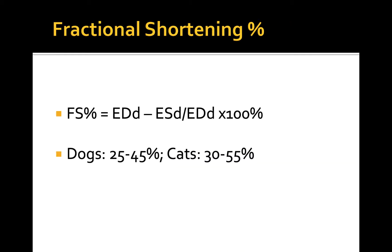Once you have these two measurements obtained, you can calculate fractional shortening using this formula: end diastolic diameter minus end systolic diameter, divided by end diastolic diameter, and multiplied by 100%. In other words, you will determine by what percentage the LV diameter decreased in size during systole as compared to diastole.